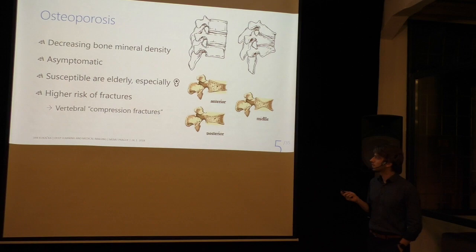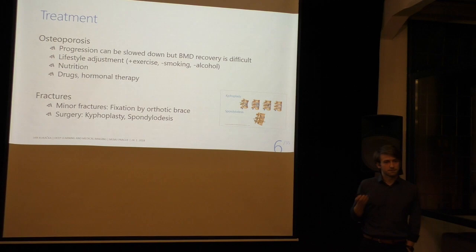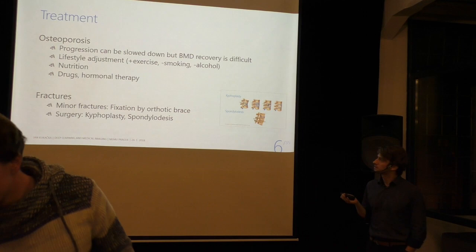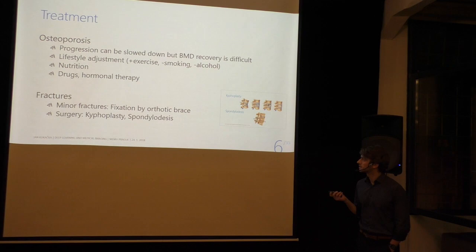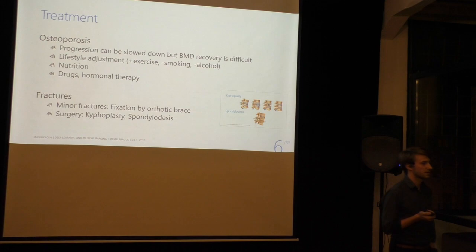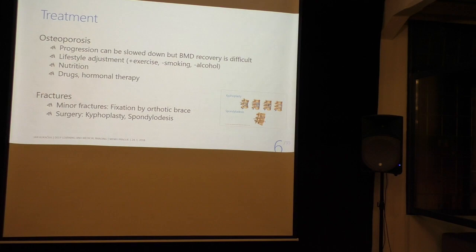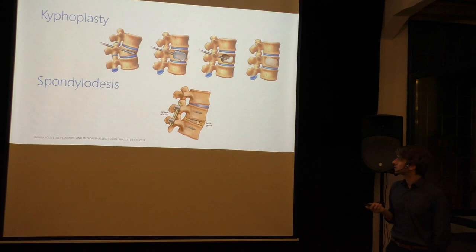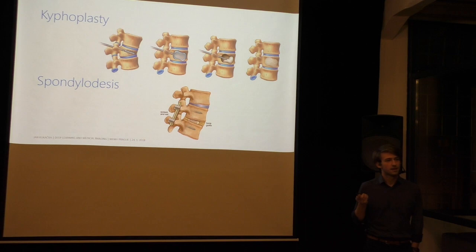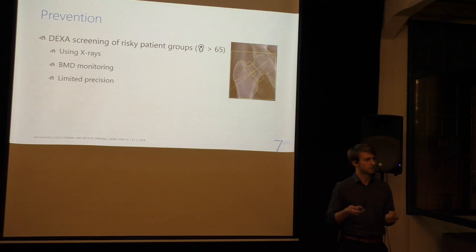What can be done with osteoporosis? If it's captured in time, we can do some lifestyle adjustments — more exercise, less smoking. There are even drugs that help against osteoporosis. When fractures happen, we can do something but it usually involves surgical operation. Two examples: kyphoplasty, where the shape of the vertebra is restored using pressurized air and the free space is filled with cement; and spondylodesis, where multiple vertebrae get connected to each other using screws and rods. As you can imagine, when it goes this far, it's bad. So that is why we need to focus on prevention of osteoporosis.